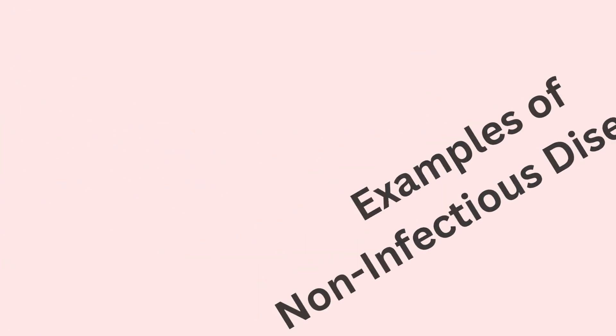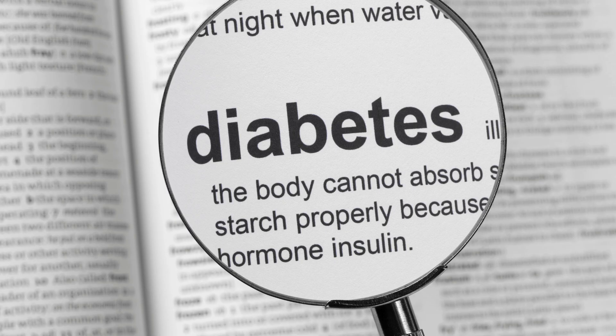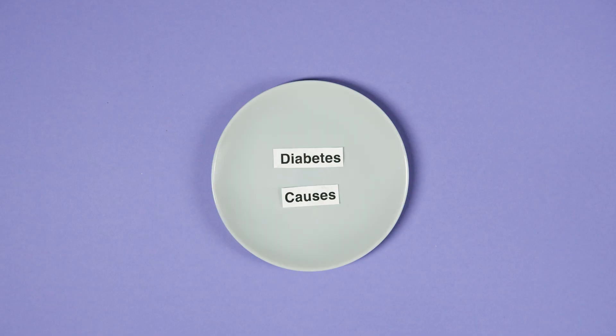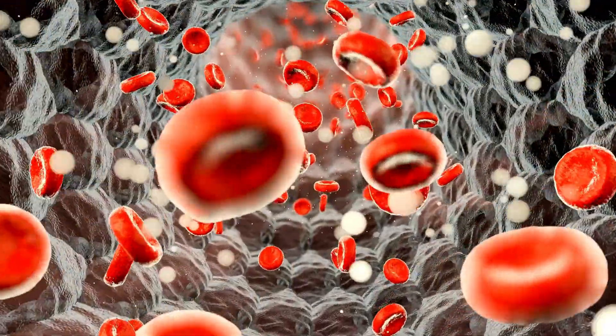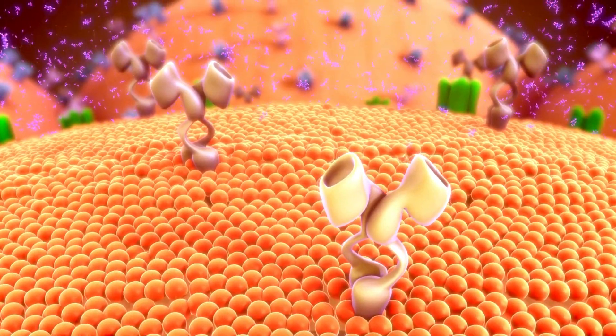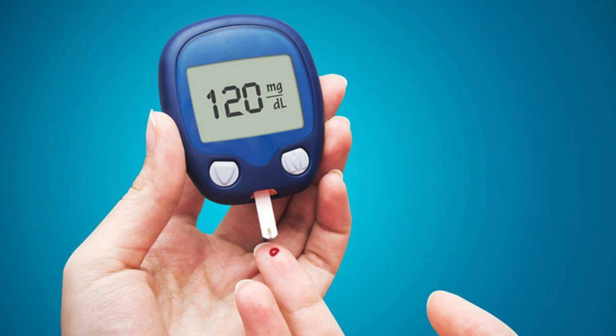Diabetes is a non-infectious disease classified as a disorder because it affects how the body regulates blood sugar, or glucose, levels. It is not caused by bacteria or viruses. Instead, diabetes occurs due to problems in how the body produces or responds to insulin, the hormone that controls blood sugar levels.